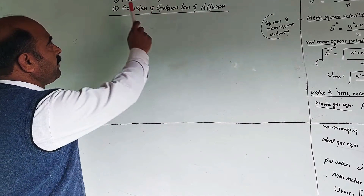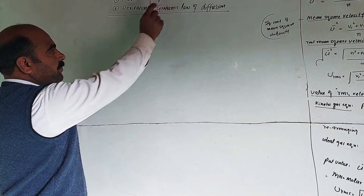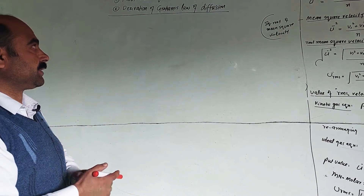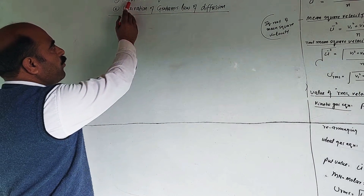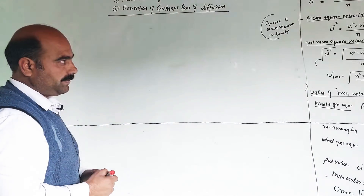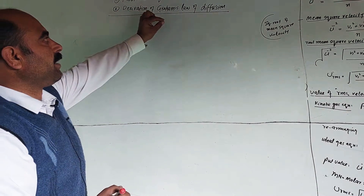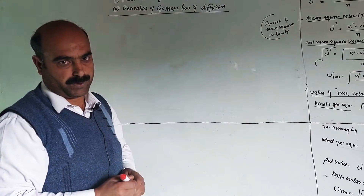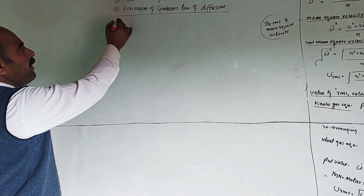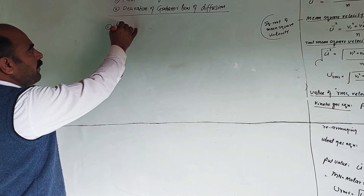Today's topic is: applications of kinetic molecular theory of gases. We will discuss two applications. The first one is root mean square velocity. The second application is the derivation of Graham's law of diffusion. Now the first topic: root mean square velocity.